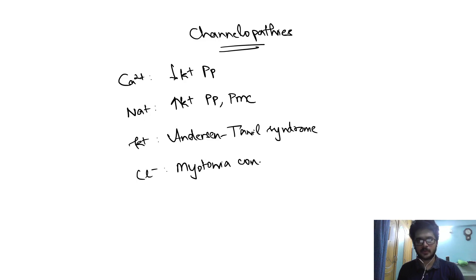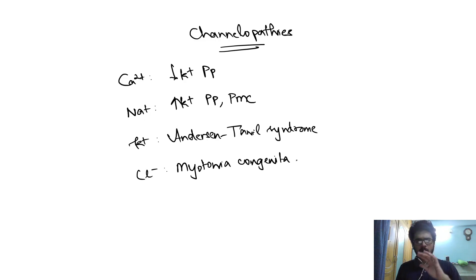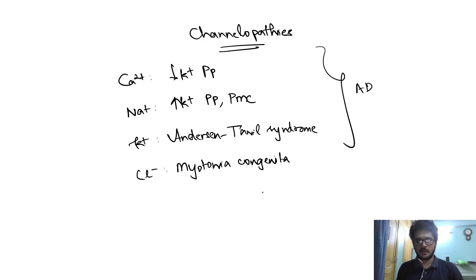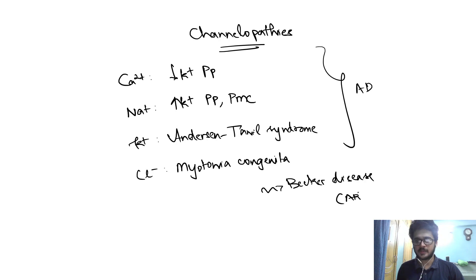In myotonia congenita we have Thompson disease as well as Becker's disease. Remember that all of these are autosomal dominant, with the exception of Becker's disease, which is a type of myotonia congenita that is inherited in an autosomal recessive manner.